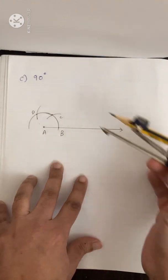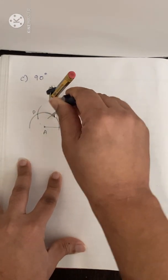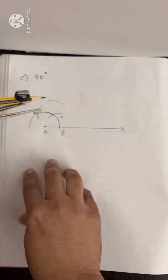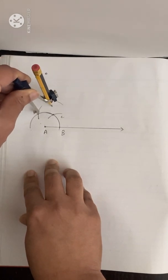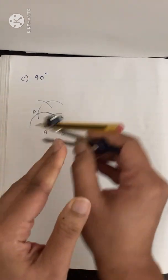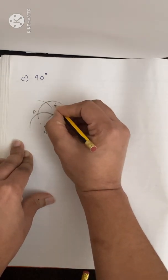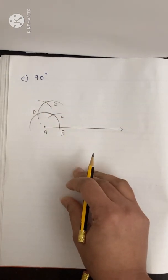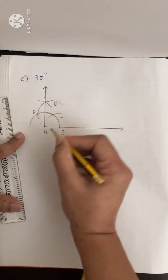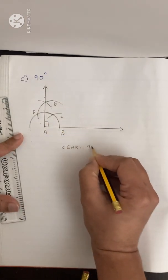Now for constructing 90 degrees, no need to change the compass radius. With C as center, draw an arc, and with D as center, draw another arc. The two arcs should intersect each other. Mark it as E. Join A and E. We get our required angle — angle EAB equals 90 degrees.